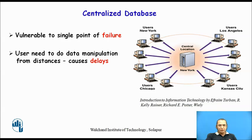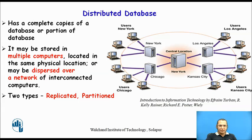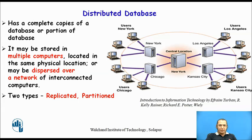To overcome the problems of centralized database, we have another type called the distributed database. Instead of putting the entire database at a single point, the database is divided and stored at multiple locations — in multiple computers at the same physical location or at different geographical locations, all connected through a network. There are two types of distributed databases: the replicated database and the partition database. Both represent the concept of distributed database.